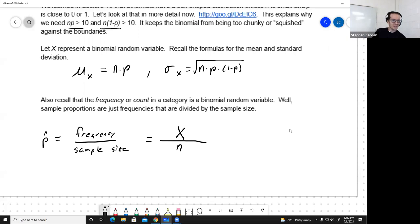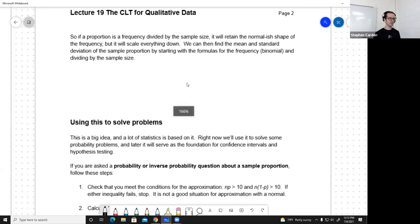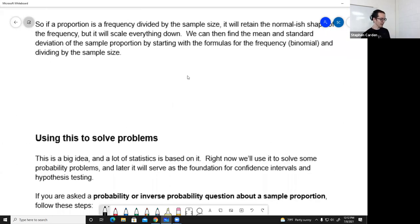Isn't the sample proportion just the frequency in that category divide by the sample size? Yeah. And so symbolically, if X is the random number that models the frequency and N is represented by the sample size, well, a sample proportion is just a binomial random variable divided by N. So shouldn't I be able to take the formulas for the mean and standard deviation of a binomial and divide those by N? That works. And we're going to do that on the next page. So if I want to know what the mean for a sample proportion is, I should take the mean for the frequency modeled by a binomial and divide it by the sample size.